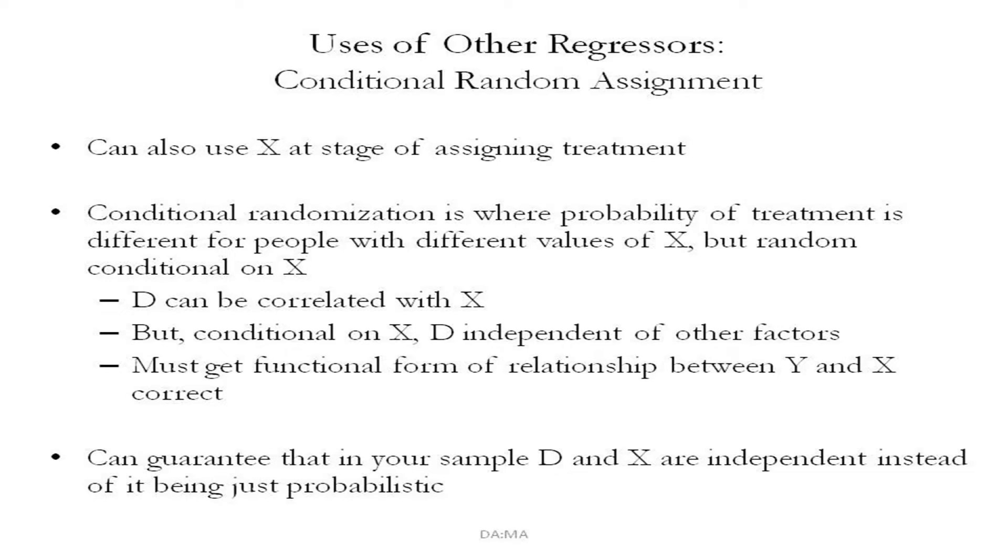The other possibility is conditional random assignment — we could also use x at the stage of assigning treatment. Conditional randomization is where the probability of treatment is different for different people with different values of x, but random conditional on x. In the cognitive ability example, suppose we have just two groups: low and high cognitive ability. Within the group of two hundred low-ability individuals, you randomly assign some to treatment and some to control. You do the same within the group of four hundred high-ability individuals. Depending on how many you choose from each group, the probability of assignment into treatment may differ between the two groups but is the same within each group.